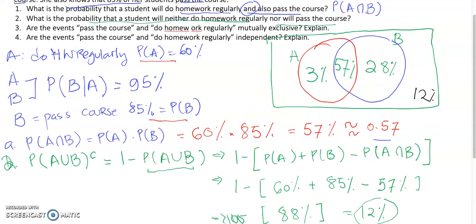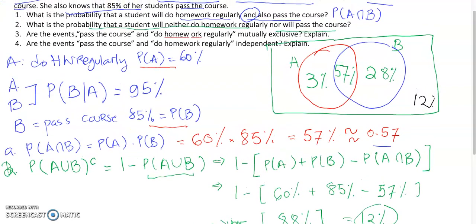Now, let's continue on part three. Are the events pass course and do homework regularly mutually exclusive? Just by looking at the Venn diagram that we just constructed here, no, it's not mutually exclusive. And the second one is we can answer based on the problem, the answer we did for part one, because A intersection with B is not equal to zero. So, based on the Venn diagram, there is an intersection here, and the intersection P(A) intersection B is not equal to zero, and it equals 0.57.